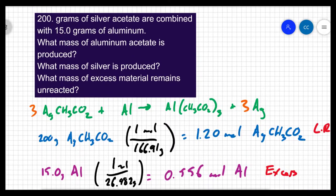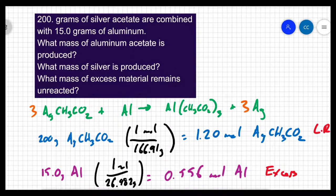Now, if we look at the setup of the question, this doesn't seem intuitive. I have 200 grams of silver acetate and only 15 grams of aluminum. But it turns out that that 200 grams of silver acetate is the limiting reactant. 15 grams is more than enough aluminum to complete the reaction.